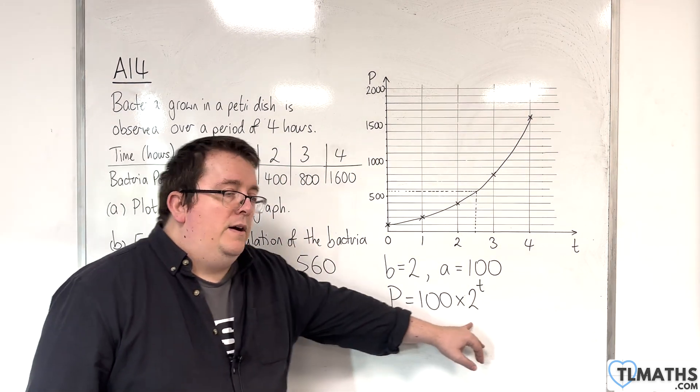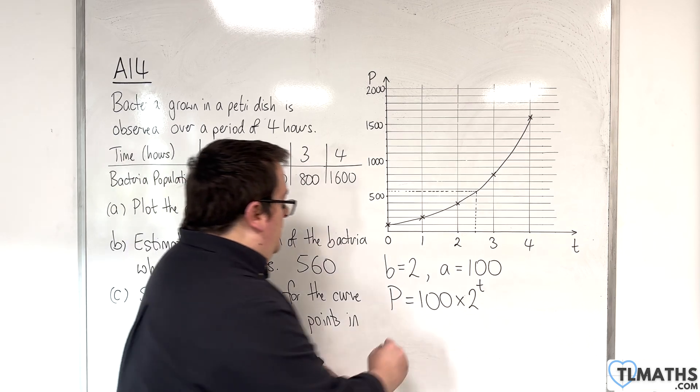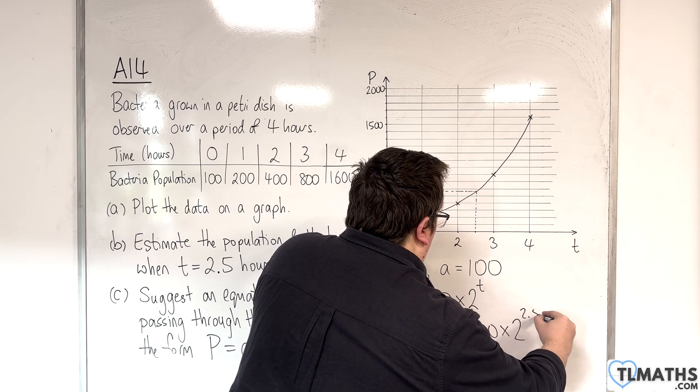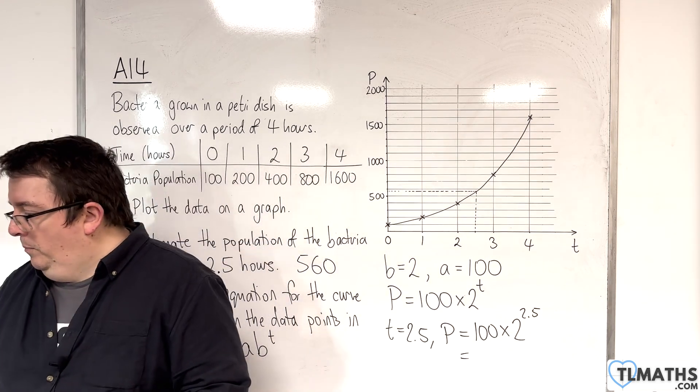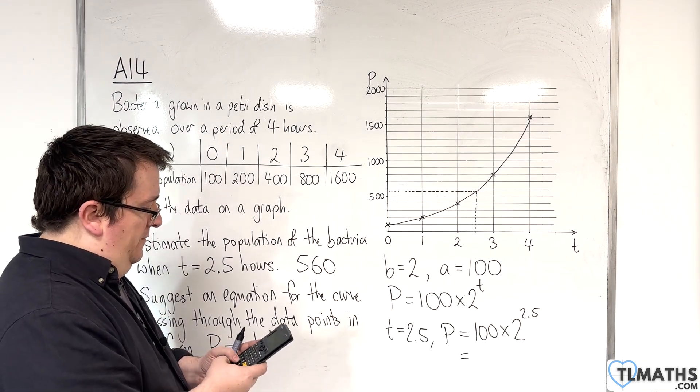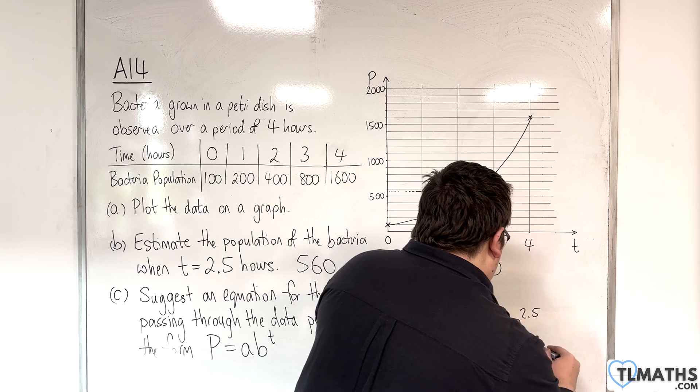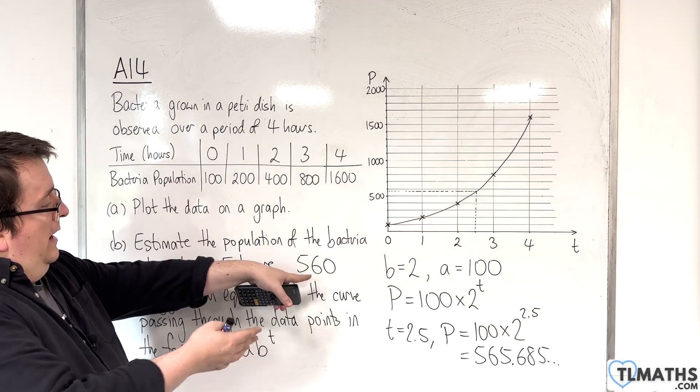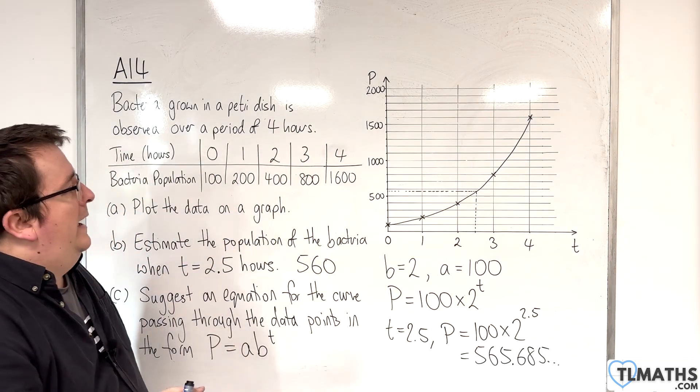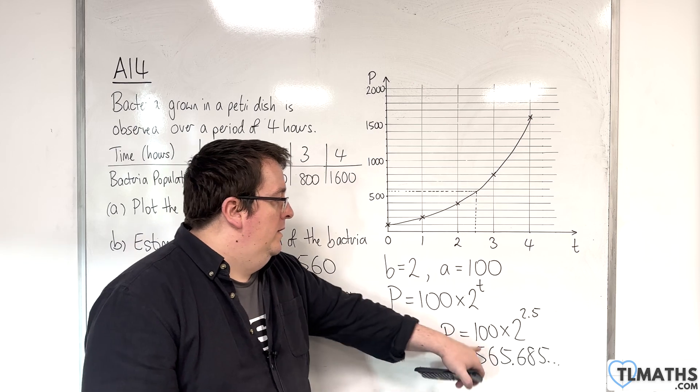Actually, now that I've got my equation, I could work out what P is when T was 2.5. When T is 2.5, P will be 100 times 2 to the 2.5. We'll put that into the calculator and see what we get. 100 times 2 to the power of 2.5, and that's 565.685, etc. You'll remember, we put 560 here, but I was umming and ahhing between 560 and 570. Actually, my graph wasn't too bad with being able to estimate that. That's how we can get the exact equation and then use that.